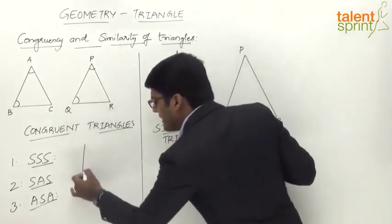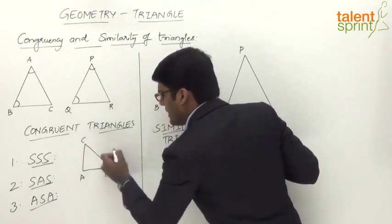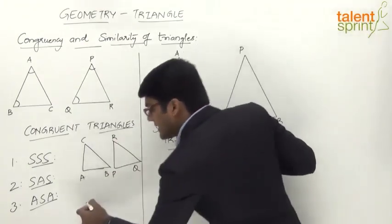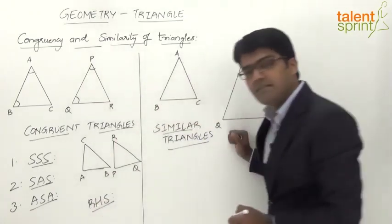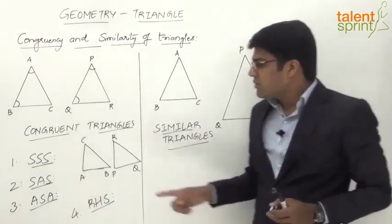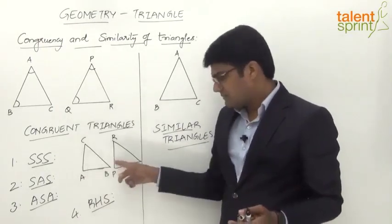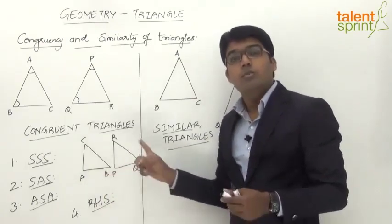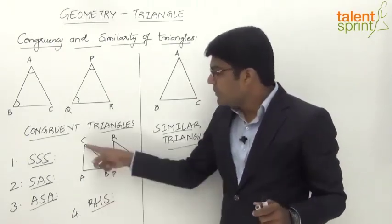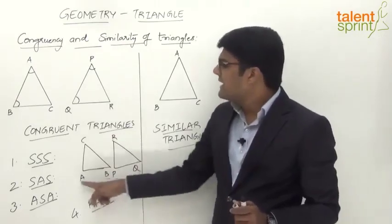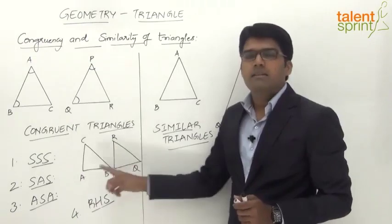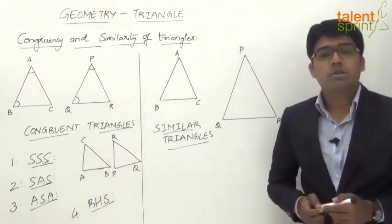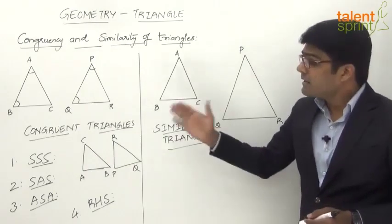As a special case for right angle triangles, we use RHS congruency — Right angle Hypotenuse Side. For two right angle triangles ABC and PQR, the right angles are already equal. So if the two hypotenuses are equal and any one corresponding side is equal — AB with PQ, or AC with PR — then the triangles are congruent and will coincide perfectly when superimposed.